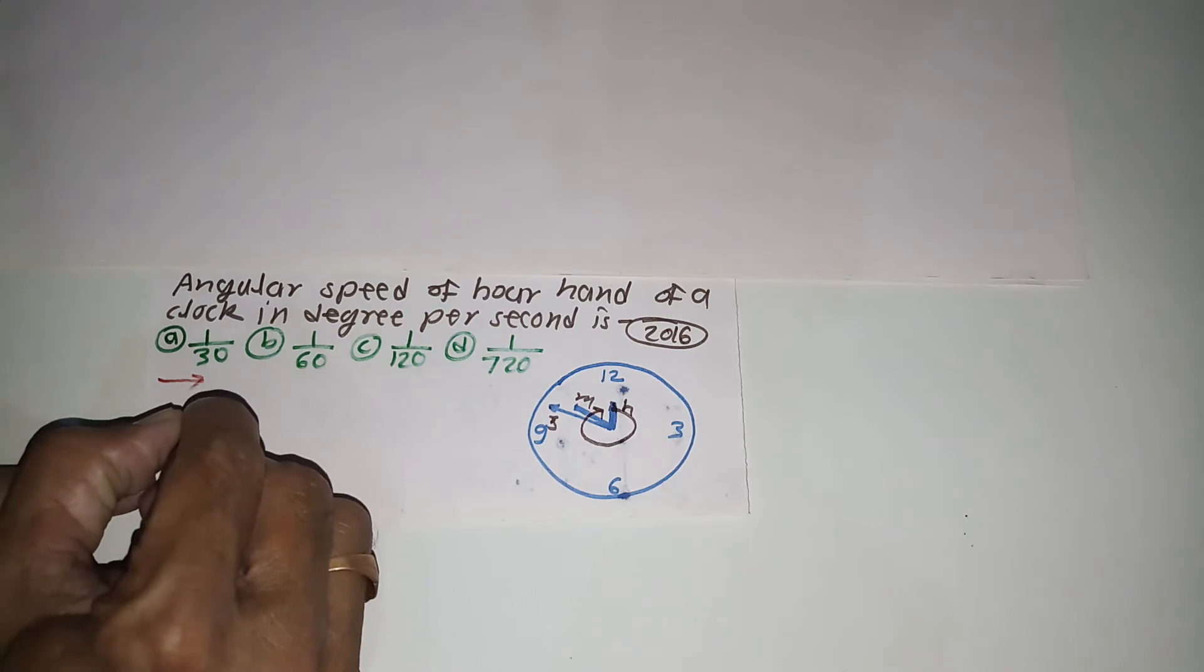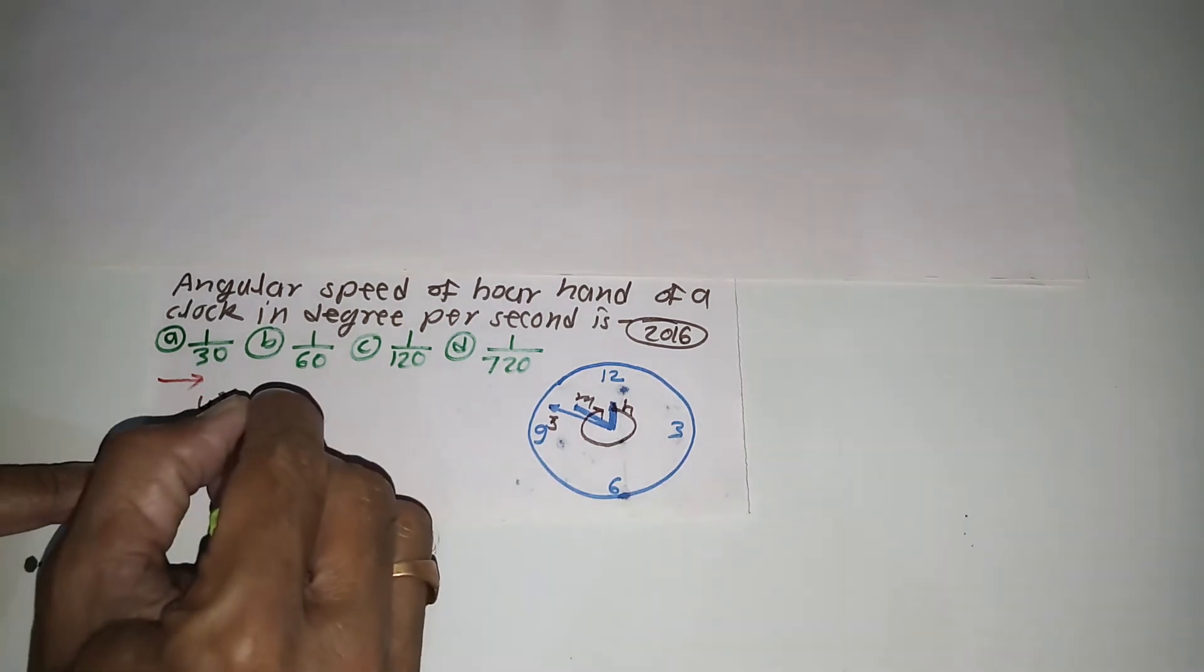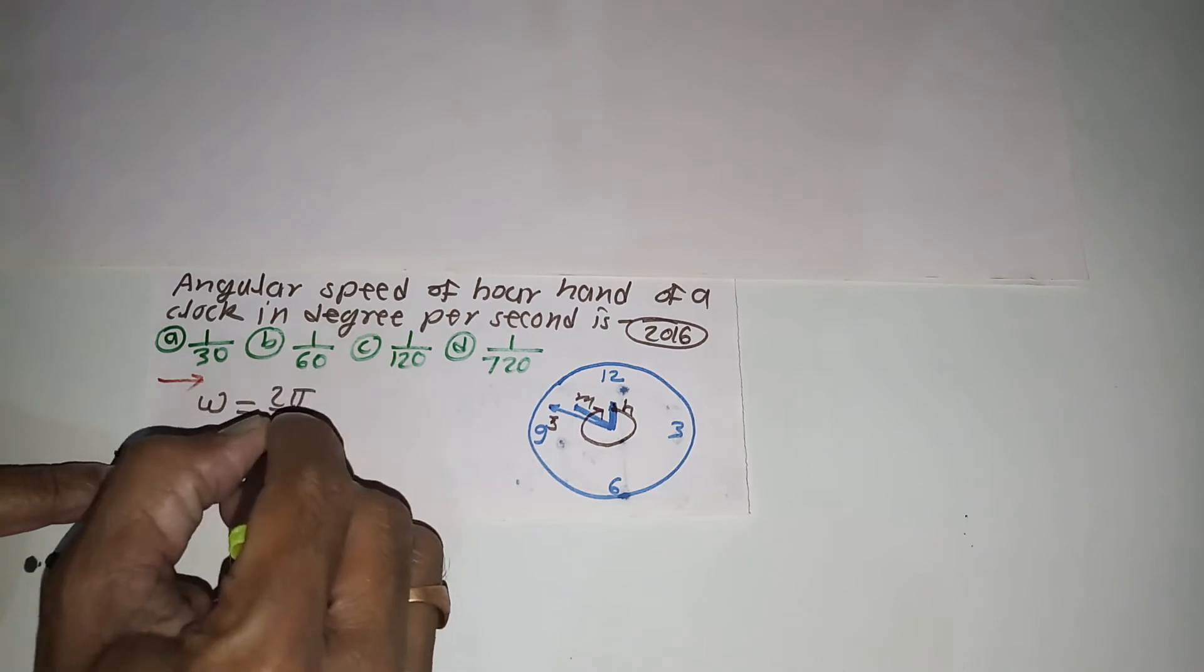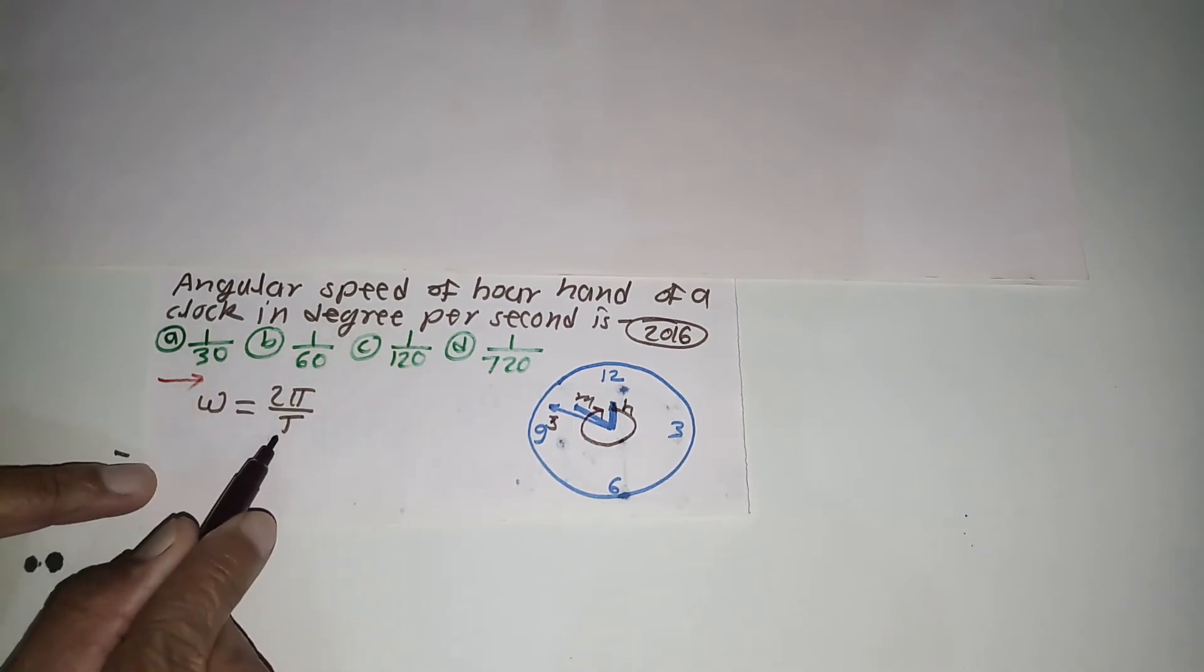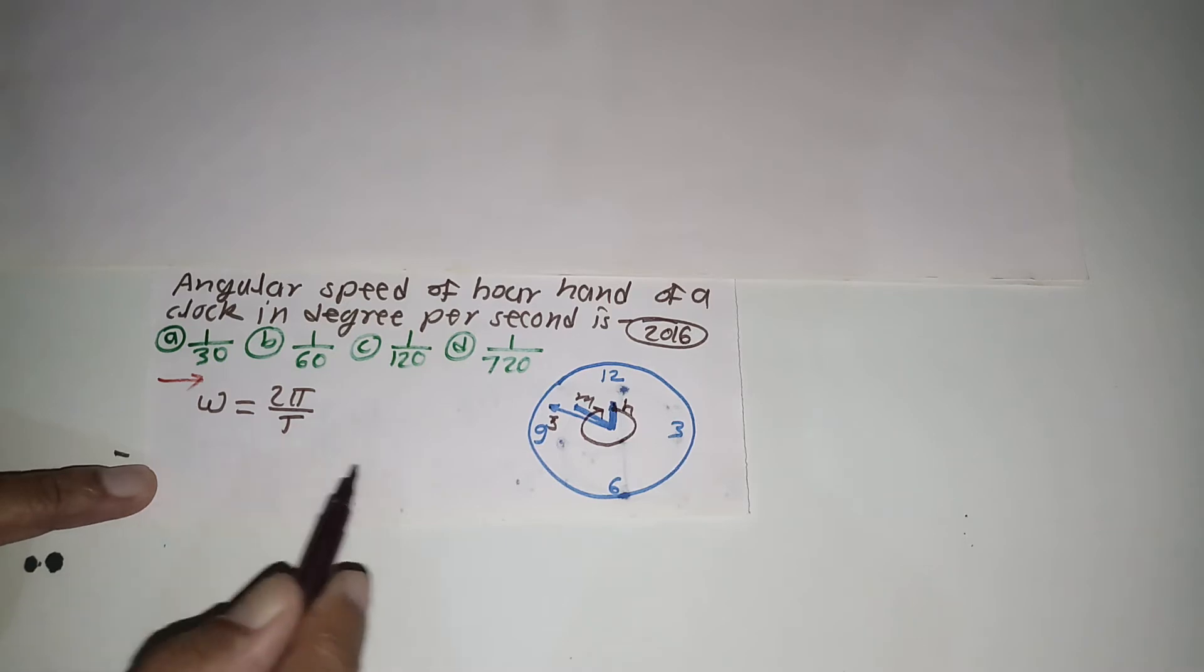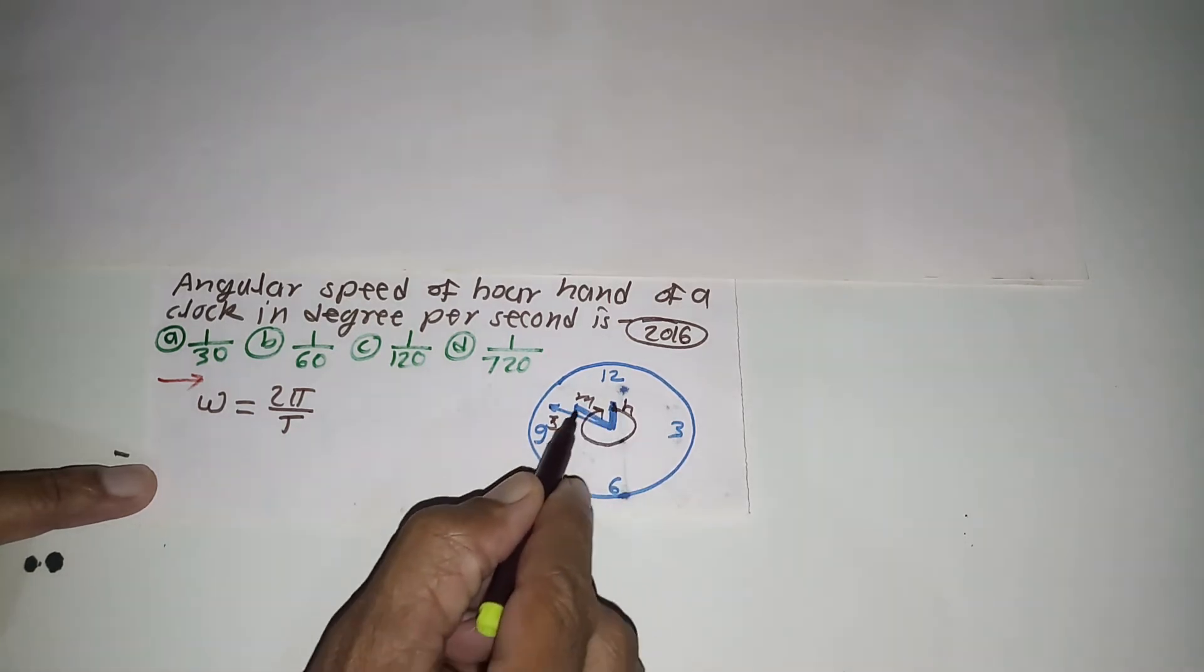The angular speed formula omega is equal to 2π upon capital T, where capital T is the time required for one rotation or one revolution along the circle.